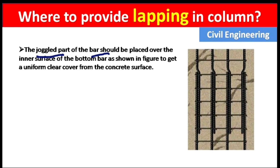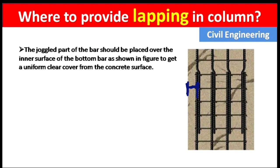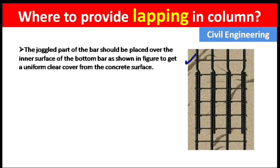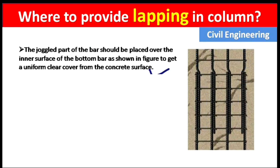The cranked part of the bar should be placed over the inner surface of the bottom bars, as shown in the figure, to get a uniform clear cover from the concrete surface. Clear cover is the distance between the steel rod and the concrete surface. To maintain equal clear cover throughout the column, we bend the rod — providing inclination on one side going inward, and on the other side going in the opposite direction.